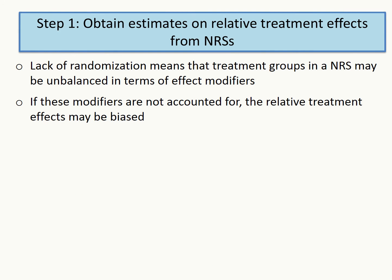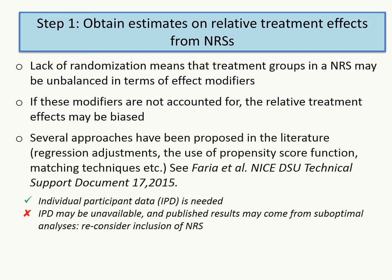The first step in the process is to obtain estimates on relative treatment effects from each non-randomized study. To attenuate the bias in treatment effects introduced by the lack of randomization, several adjustment methods are possible. Regression models and the use of propensity scores are the most popular options to reduce the impact of unbalanced effect modifiers within a non-randomized study. The availability of individual patient data would improve flexibility and enable systematic reviewers to address any shortcomings in the original analysis.